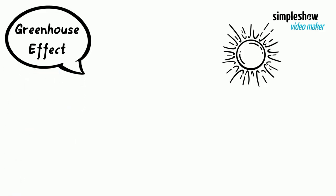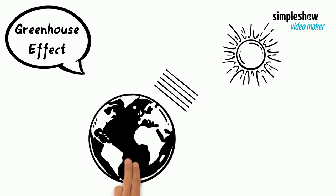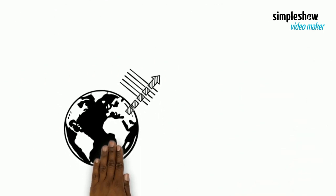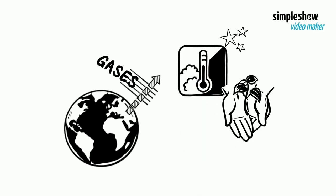The sun radiates heat energy through the atmosphere. This heat is absorbed by the earth and then re-radiated back through the atmosphere into space. Some of the outgoing heat is absorbed by the greenhouse gases, which provides the necessary temperature for life to exist on earth.